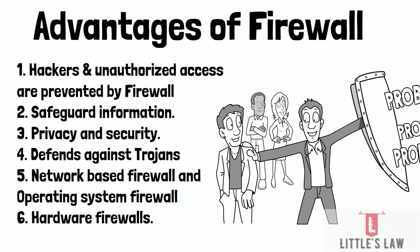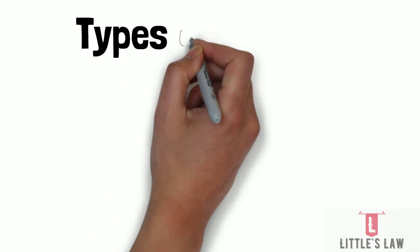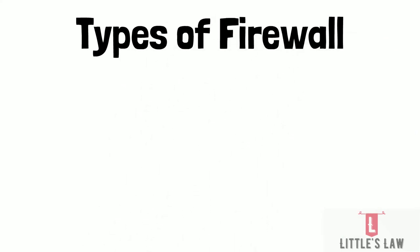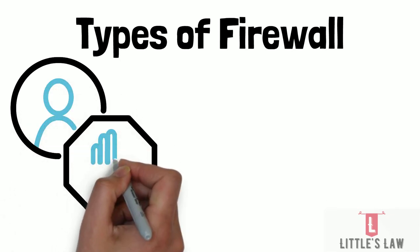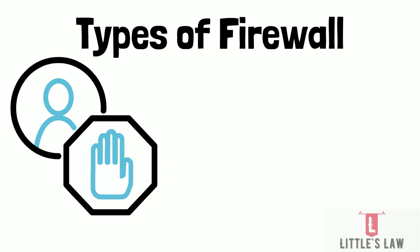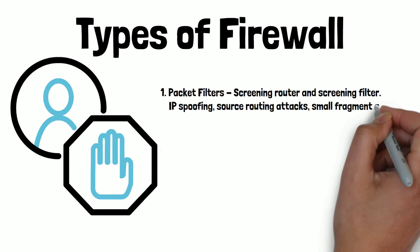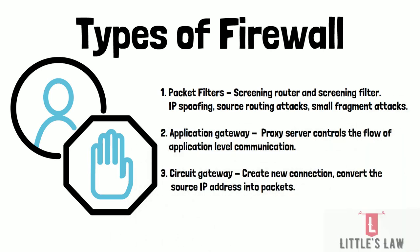Now let's see the types of firewall. The first type is packet filters, also known as screening router or screening filter, because it decides whether a packet should be forwarded or discarded based on its outputs. IP spoofing, source routing attacks, and small fragment attacks can all compromise packet filter security. Dynamic packet filters and stateful packet filters are two more complex types of packet filters handled by the firewall.